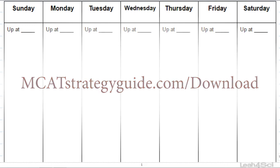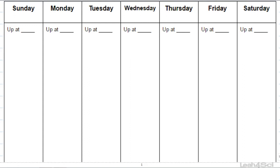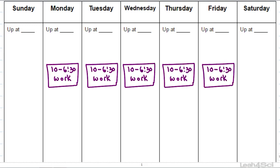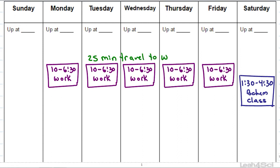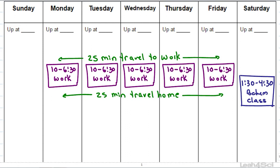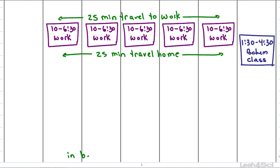Our first example is a student who is working Monday through Friday and taking a class on Saturday afternoon. Starting with non-flexible commitments: work from 10 to 6:30 Monday through Friday, her class from 1:30 to 4:30 on Saturday afternoon, and travel time of 25 minutes each way. Given that she has to leave her house around 9:30, she chose to set her wake-up time at 8am on weekdays and 9am on weekends. In order to wake up at 8am and be fully functioning, her goal is to get to bed by midnight.